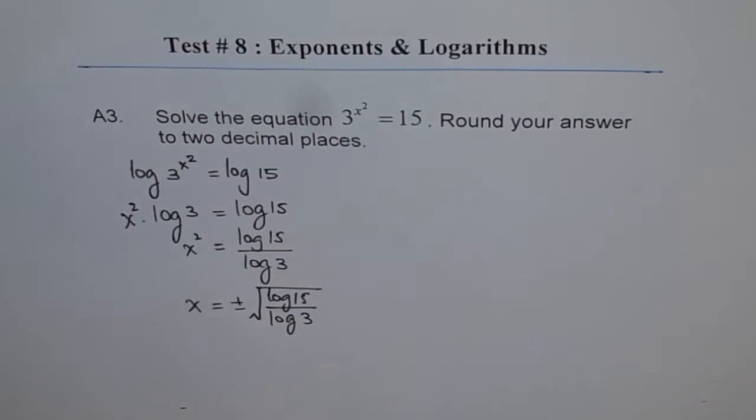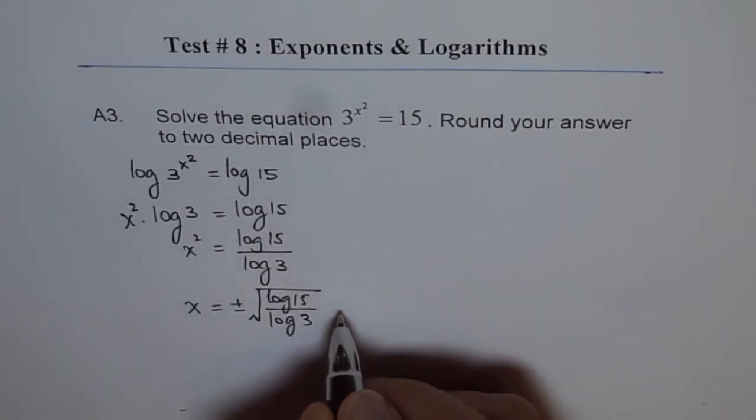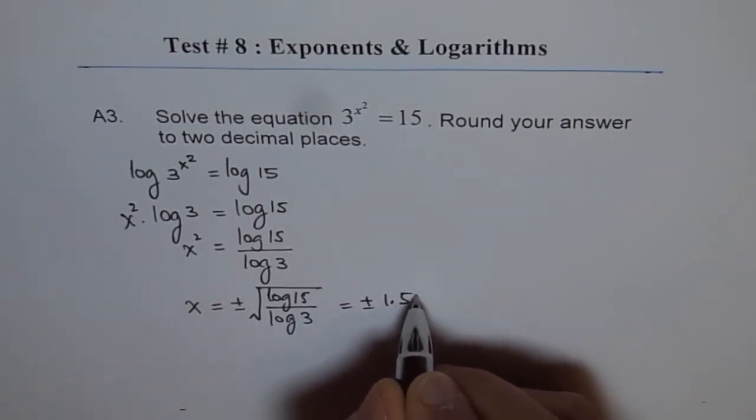Now we can calculate this answer. So it is log of 15, within square root, within brackets, log of 15 divided by log of 3, bracket close. And so we can calculate this as equal to 1.57. So that is plus and minus 1.57.